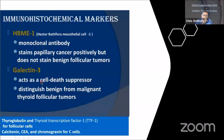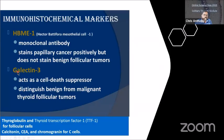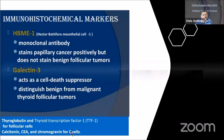Immunohistochemical markers, not easily available in Malaysia, include HBME1 — a monoclonal antibody which stains cancer cells but does not stain follicular benign cells — and galectin-3. These are the two commonly used markers but are costly. Other markers include thyroglobulin and thyroid transcription factors for follicular cells, and calcitonin, CEA, and chromogranin for C cells (parafollicular cells). FNAC is done under ultrasound guidance using a syringe with a needle to aspirate cells from the nodule, which are then stained on a slide and read by the histopathologist.